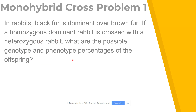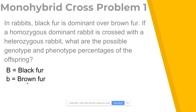Now that we understand what the problem is saying, we can get started with solving it. Step one of the four-step method is to pick a letter and define it. I'm going to use the letter B, but remember you can use any letter as long as the capital and lowercase look different from each other. For instance, using the letter O is probably not the best idea because you can't always tell the difference between a capital O and a lowercase o. So I'll use B: big B represents the dominant allele — black fur — and little b for the recessive allele — brown fur.